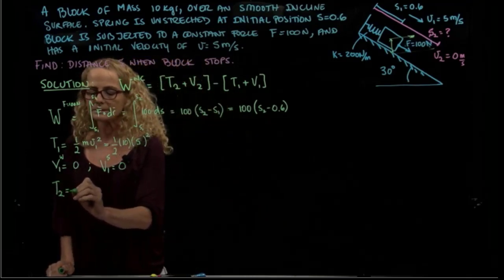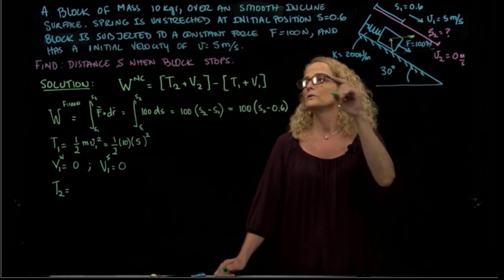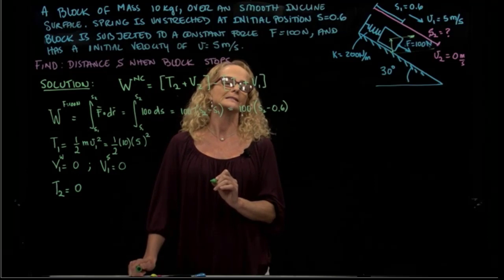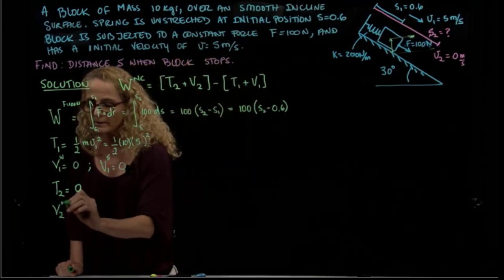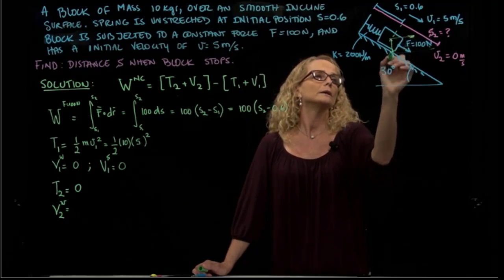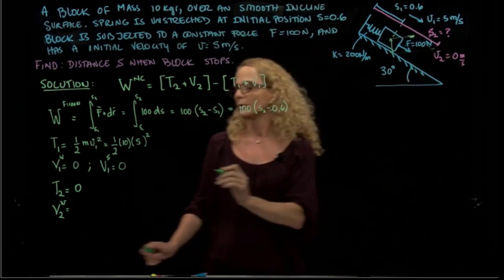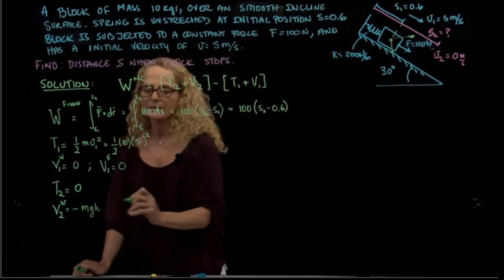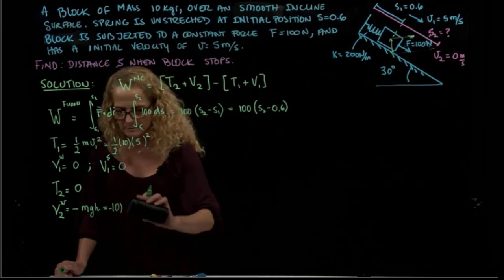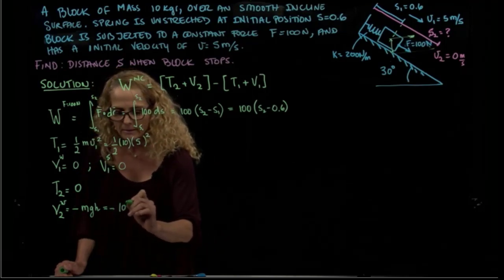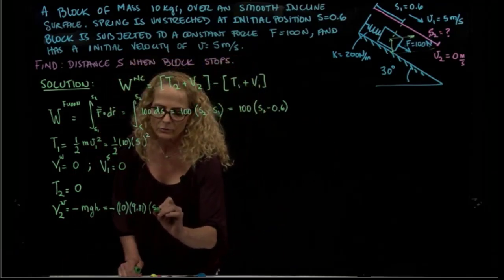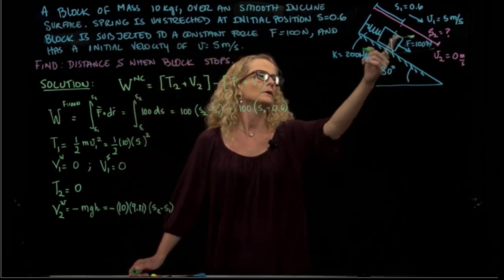How about the kinetic energy in the second position? We know that we are being asked to find the distance when the block stops. It means that the velocity is zero. If we have zero velocity, the kinetic energy in the second position will be zero. Now we go to the potential energy of weight. We did lose potential energy because our mass dropped. So we will have negative mgh that we went down. The mass will be ten, then 9.81, and the distance that I went down, which is S2 minus S1 sine of 30. That will be equals to negative ten times 9.81 times S2 minus 0.6 times sine of 30, which is 0.5. That will give me minus 49.05 times S2 minus 0.6.